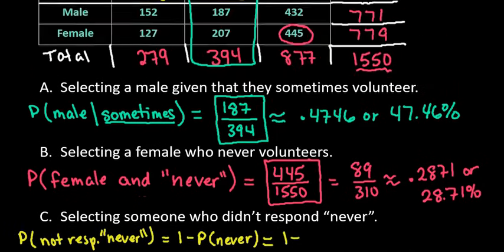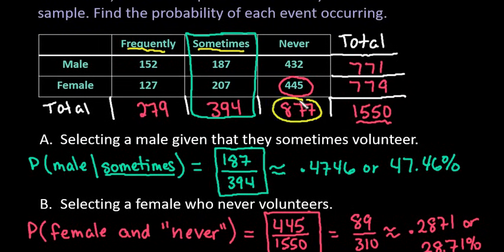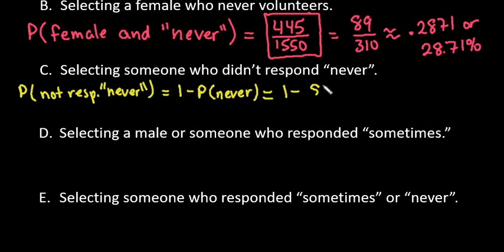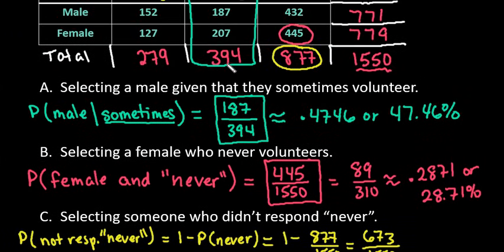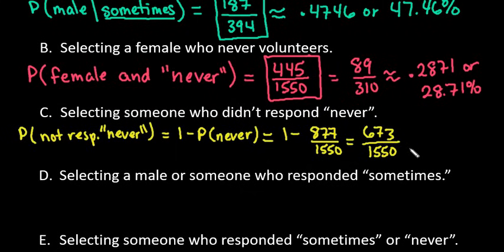The probability of responding never is, if we look at the never column, we see that there was a total of 877 of our respondents that said never out of a total of 1550. If I simplify this, if I do one minus 877 over 1550, I get a total of 673 out of 1550. Or like I said I could have gotten the same thing by taking the 279 plus the 394. Either way would give me the same answer, or we could write this as approximately 0.4342.